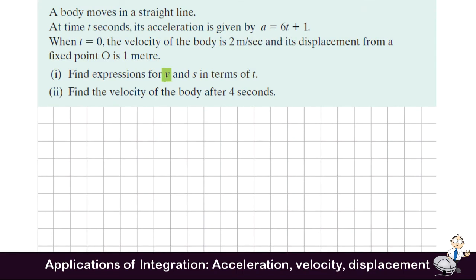We want to find velocity first. We know that v is the integral of a dt. a in this question is 6t plus 1. So we're going to integrate 6t plus 1. We raise the power by 1 and divide by the new power. That becomes 6t squared divided by 2, which is 3t squared. 1 becomes t, and then we have the constant of integration. So this gives 3t squared plus t plus c.